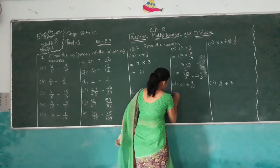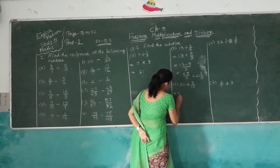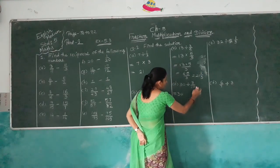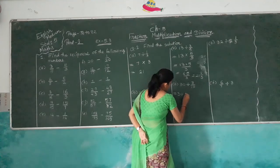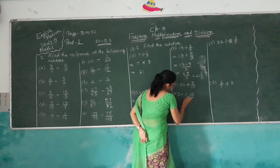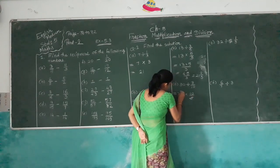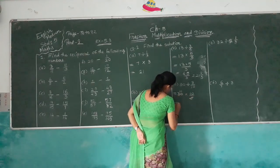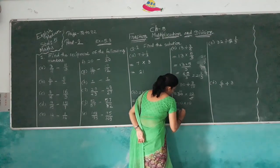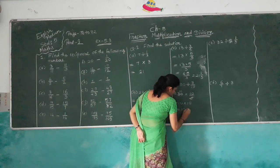Next: 30 divided by 3/10. The reciprocal of 3/10 is 10/3. So 30 multiplied by 10/3: 3 goes into 30 giving 10, and 10 multiplied by 10 is 100. The answer is 100.